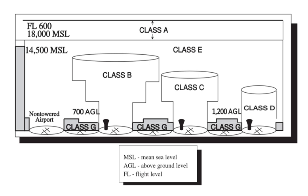Class B airspace is generally airspace from the surface to 10,000 feet MSL surrounding the nation's busiest airports in terms of airport operations or passenger emplanements. The configuration of each Class B airspace area is individually tailored, consists of a surface area and two or more layers — some Class B airspace areas resemble upside-down wedding cakes — and is designed to contain all published instrument procedures once an aircraft enters the airspace. An ATC clearance is required for all aircraft to operate in the area, and all aircraft that are so cleared receive separation services within the airspace.